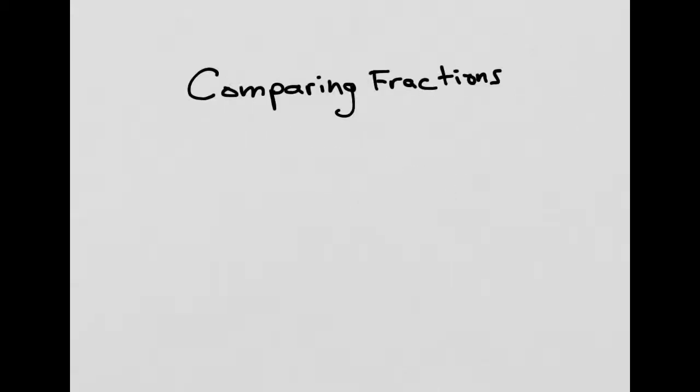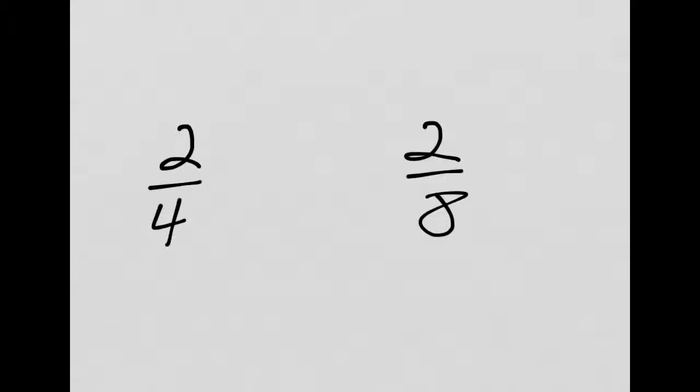I think that gives us enough information to tackle our last big topic: comparing fractions. Let's write a couple of fractions — we have two fourths and two eighths. Now this is a tricky one. What do you notice? The numerators — the number on top — are the same. There's both two of something. But the denominator is different — we have fourths and we have eighths. Thinking in your mind for a moment: which is a bigger piece, a fourth or an eighth? You might be thinking an eighth is bigger because eight is a bigger number, but it's not a bigger piece. Let's take a look at why.